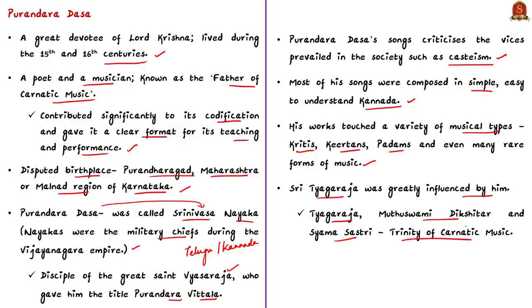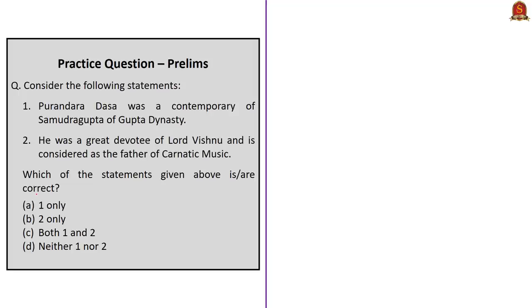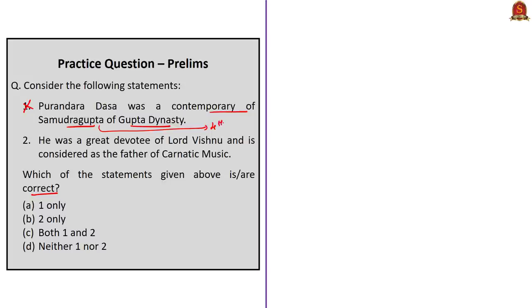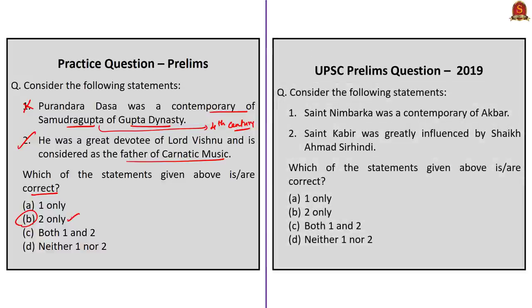Note that Tyagaraja, Muttuswami Dikshitar, and Syama Shastri are known as the Trinity of Carnatic music. With this information, the question has two statements: the first states that Purandharadasa was a contemporary of Samudragupta of the Gupta dynasty — this is incorrect because Purandharadasa lived in the 15th and 16th centuries whereas Samudragupta lived in the fourth century. The second statement says he was a great devotee of Lord Vishnu and is considered the father of Carnatic music — this is correct. So the correct answer is option B, two only. In 2019 prelims there was a question on saint Nimbarka asking if he was a contemporary of Emperor Akbar — so always try to know the contemporary rulers of the saints you study.